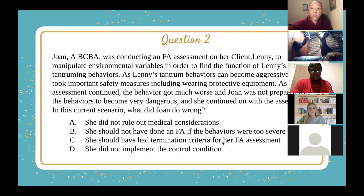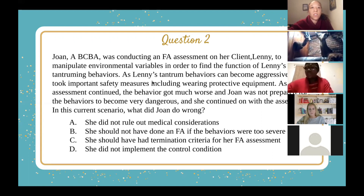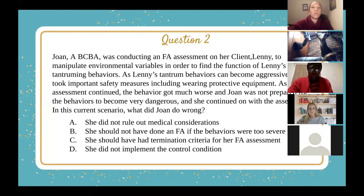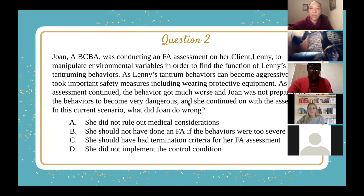The answer is C — she should have had termination criteria. When you do a functional analysis, you are reinforcing and essentially provoking problem behaviors, so there is always a risk of behaviors escalating and becoming dangerous. You have to be prepared and know when to stop. The scenario states that Joan was not prepared for the behaviors to become dangerous and she continued the assessment even when they were dangerous. Before you conduct an FA, you have to decide in advance that if behaviors escalate to a dangerous level, you're going to stop.